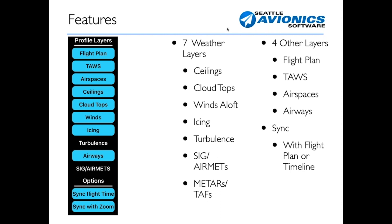When you synchronize with a flight plan, the weather on the profile view is based on what's expected at each point during your flight — takeoff time on the left, landing time on the right for a six-hour flight. You can also turn that off and select a time period on the timeline to show what the weather looks like for the entire flight at one specific time. The other sync option is with map movements — if you zoom the 2D map to two or three waypoints, the profile view zooms to those same waypoints automatically.